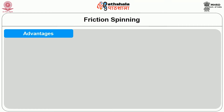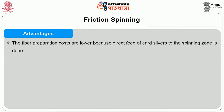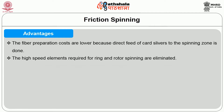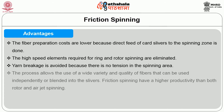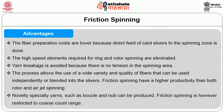The yarn is withdrawn in the direction parallel to the friction drum axis and delivered to a package forming unit. Advantages of the DREF system include lower fiber preparation costs because direct feed of carded slivers to the spinning zone is used. The high-speed elements required for ring and rotor spinning are eliminated. Yarn breakage is avoided because there is no tension in the spinning area. The process allows the use of a wide variety and quality of fibers independently or blended into slivers. Friction spinning has higher productivity than both rotor and airjet spinning, and novelty specialty yarns such as bouclé and nub can be produced. However, friction spinning is restricted to the coarse count range.